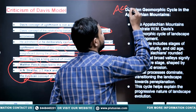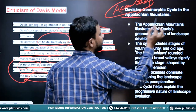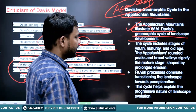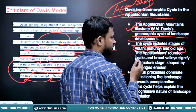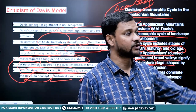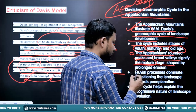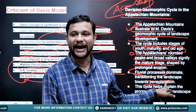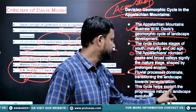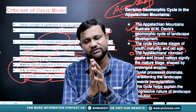An important case study is the Appalachian Mountain range on the eastern margin of North America. The Appalachians illustrate Davis's geomorphic cycle of landscape development, which includes the stages of youth, maturity, and old age. The Appalachians' rounded peaks and broad valleys signify that they are still in the mature stage of their life, and the rivers eroding the surface are equally in the mature stage. Fluvial processes dominate, transitioning the landscape towards peneplain formation at the end of the cycle.